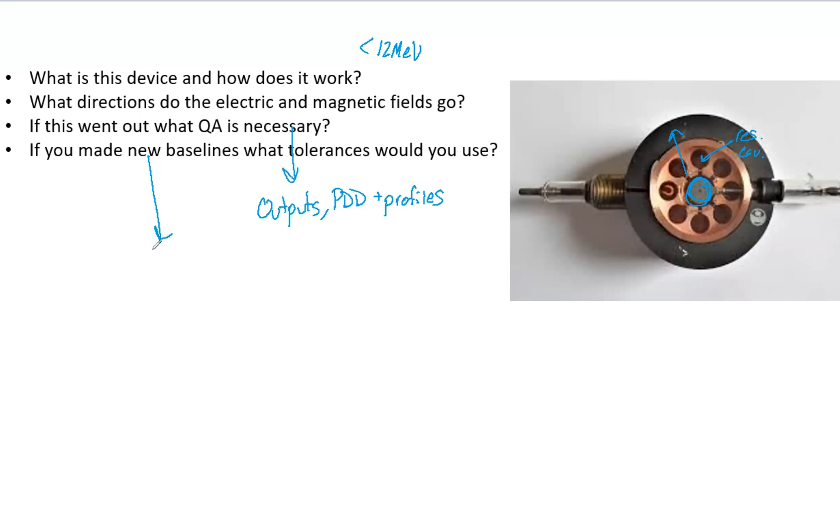Now if you had to make new baselines, what references and tolerances would you use? First thing I would want to use is TG-142 as a reference, and I would want to use the annual tolerances. Remember what we're trying to do ultimately is make our machine replicate what we have in our treatment planning system.